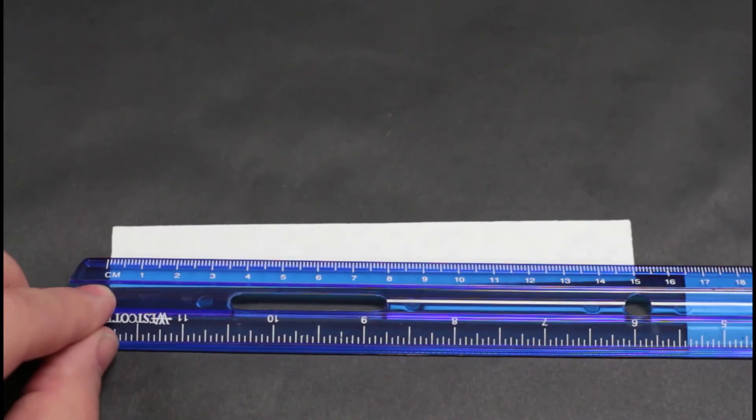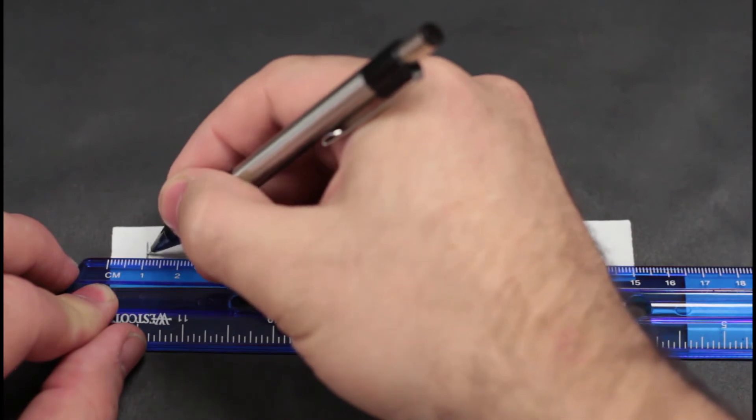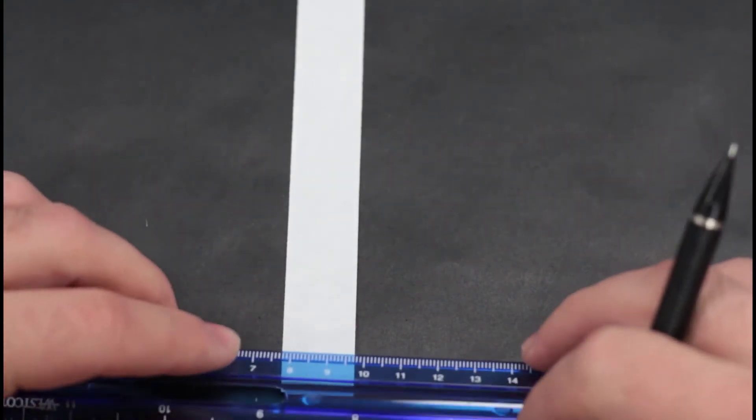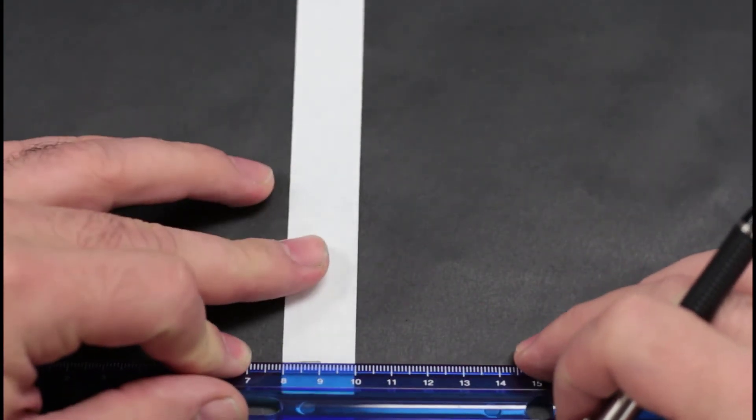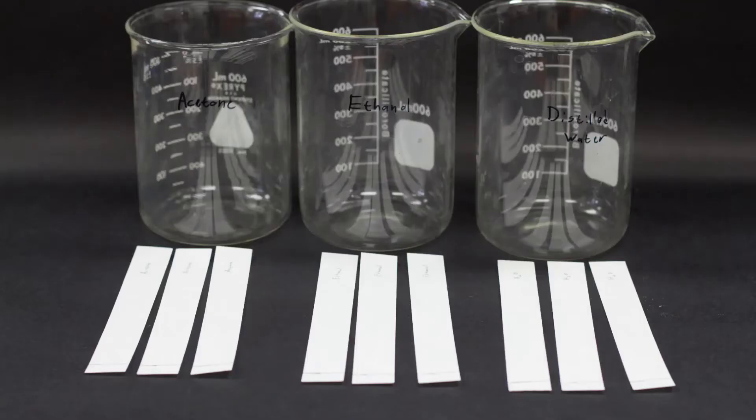The steps of our procedure go as follows. You'll select three ink samples to use for the chromatography. For each chromatography paper, use a pencil to mark a line straight across one centimeter from the end. It must be pencil because the pencil lead will not interact with any of the solvents, so you'll still be able to see it after we do this experiment.